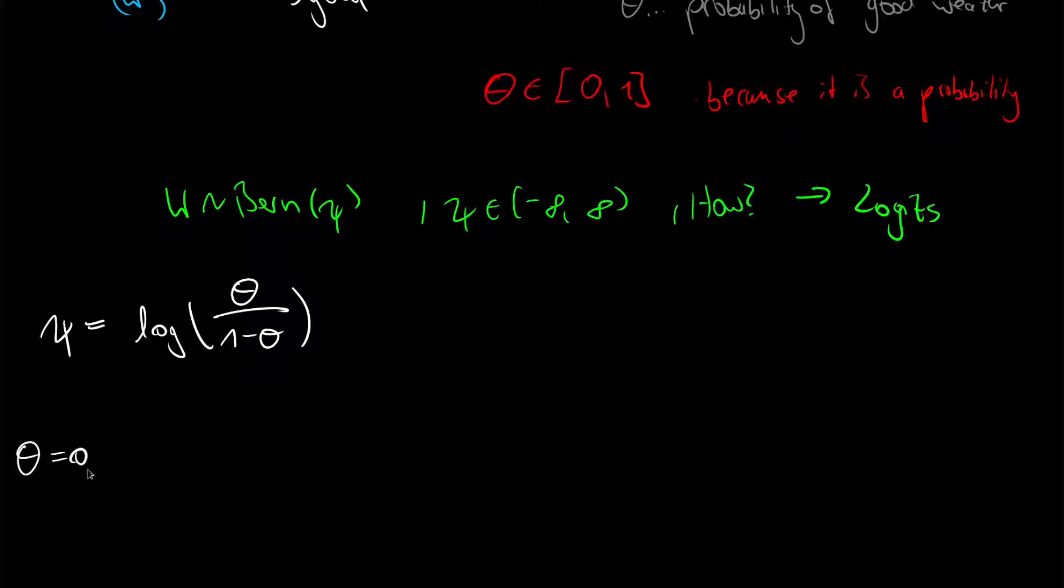If theta is 0, so for instance we have 100% chance of bad weather, then our psi would be 0 divided by something which is still 0, and the logarithm of 0 is minus infinity. If theta is 0.5, then our psi is 0.5 over 1 minus 0.5, which is 0.5 over 0.5, which is 1, and the logarithm of 1 is 0.